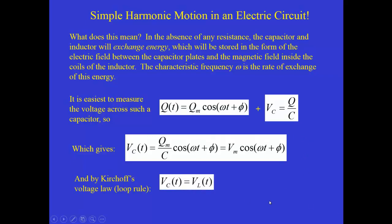And notably, because the only two elements in this circuit were the capacitor and the inductor, their voltages apart from the minus sign always have to be the same. And that's just one of the consequences of the loop rule.